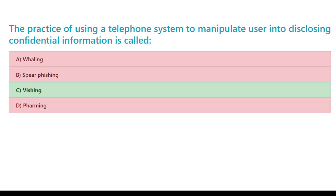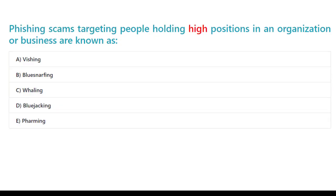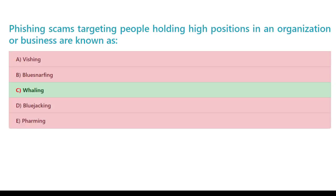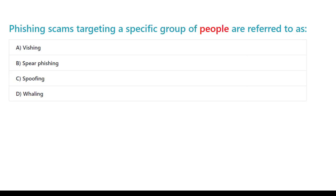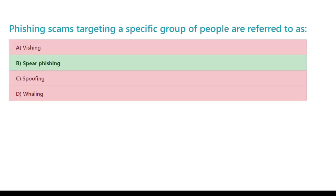Phishing scams targeting people holding high positions in an organization or business are known as: A. Vishing. B. Bluesnarfing. C. Whaling. D. Bluejacking. The correct answer is B. Spear phishing.